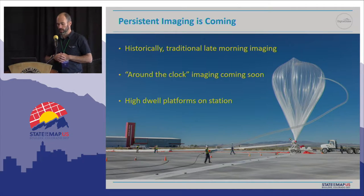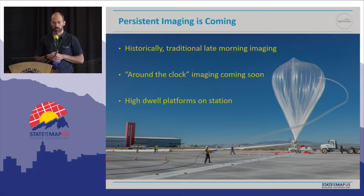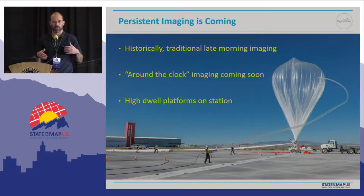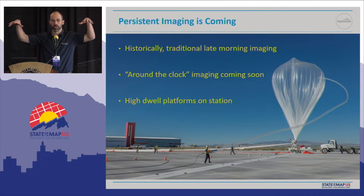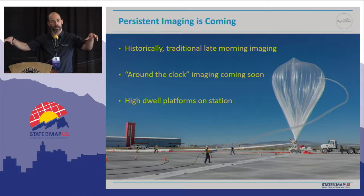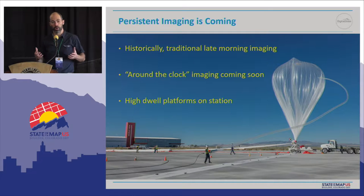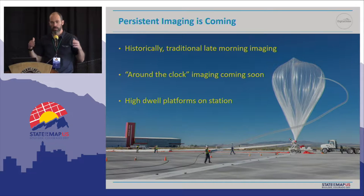Another company, called Worldview out of Arizona, is looking at stratollites — a technology that flies in the stratosphere at about 70,000 to 80,000 feet, which is where the SR-71 used to fly. You're above controlled airspace and can go anywhere in the world. They have technologies to maintain these balloon-like stratollites over the territory you're observing, and you can put any payload on top — weather sensors, imaging cameras. We've been working with them on how to leverage this for persistent mapping.